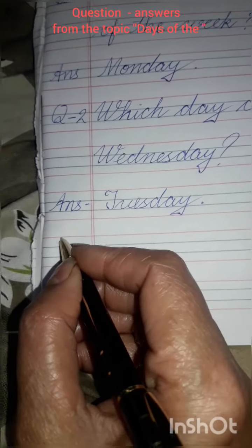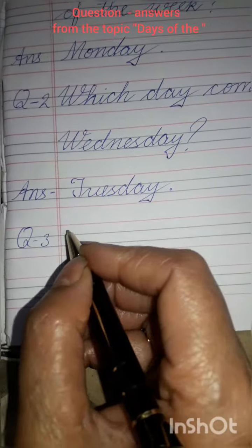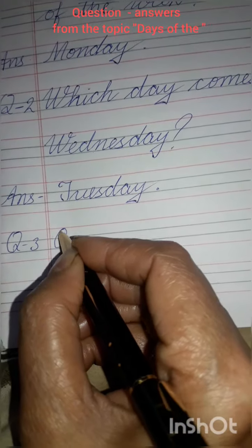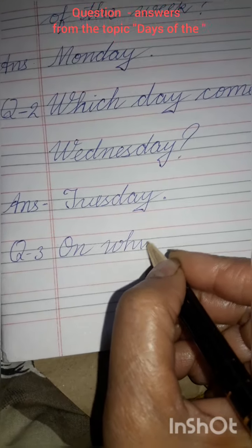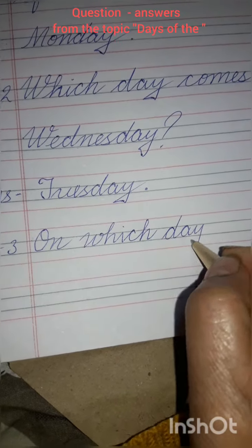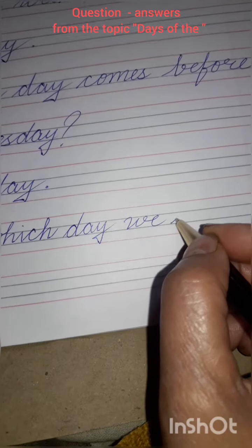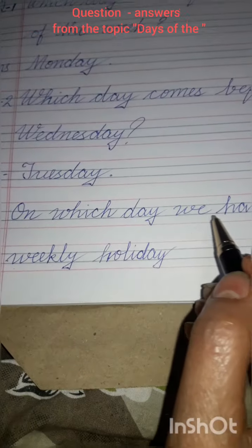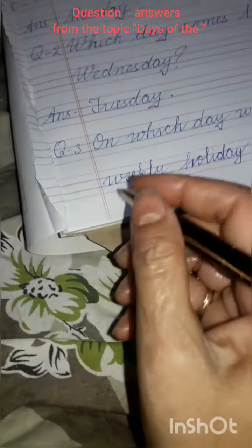Then write down question number 3 here. The question is on which day, O-N on, W-H-I-C-H which day we have our weekly holiday. Put a question mark.